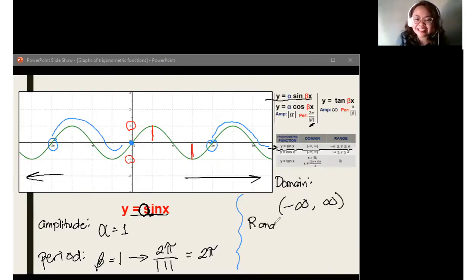For the range. Next, for our range, we now look at the formula. Again, it's negative alpha, less than or equal to Y, less than or equal to alpha. The alpha value is 1, so we just substitute here. We'll get negative 1, less than or equal to Y, less than or equal to 1.